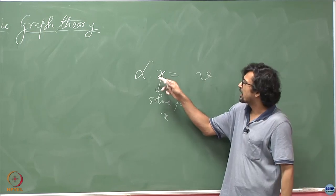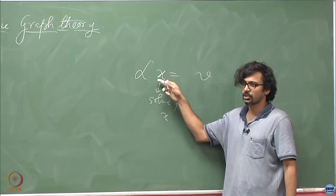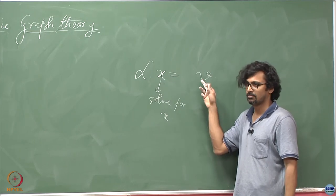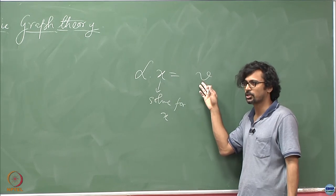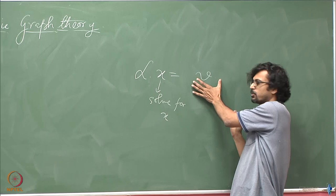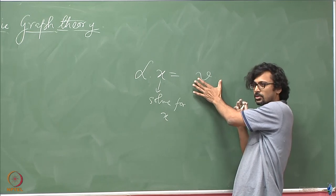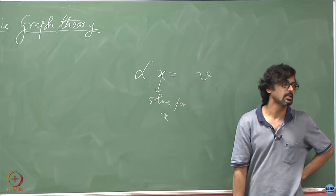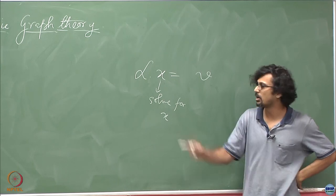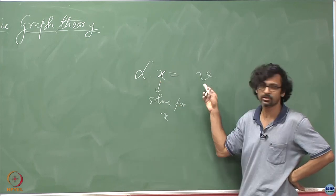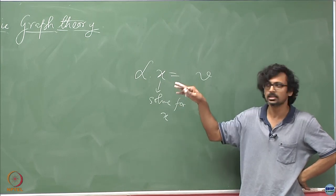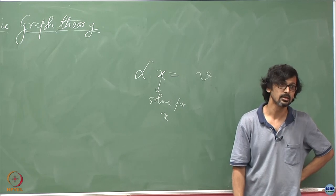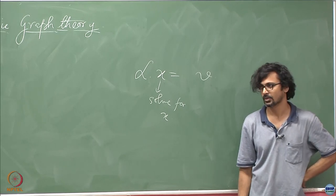Earlier I gave you the node potentials and told you that the edge potentials are the unknowns you have to determine. To uniquely fix them, you would have to invert this matrix somehow. We will next show that this matrix is never going to be invertible for a simple graph.